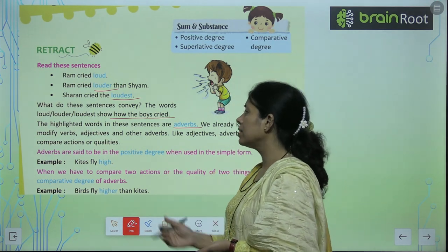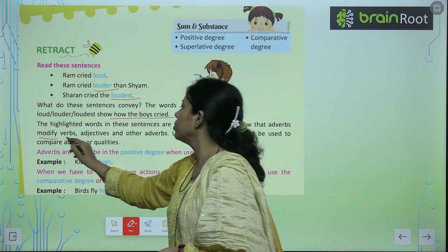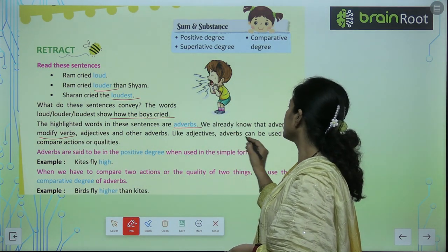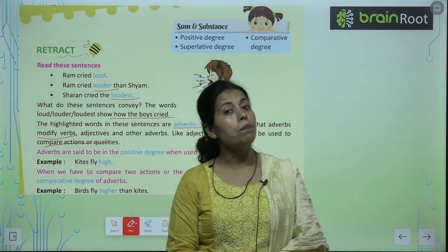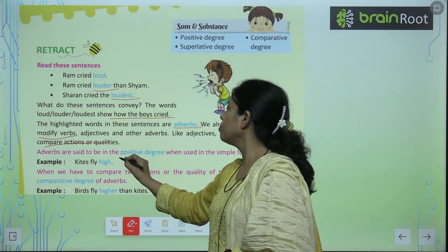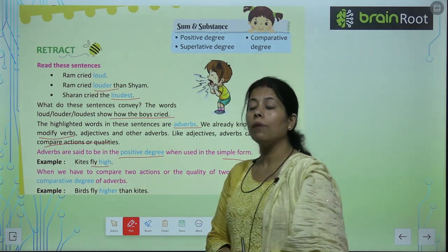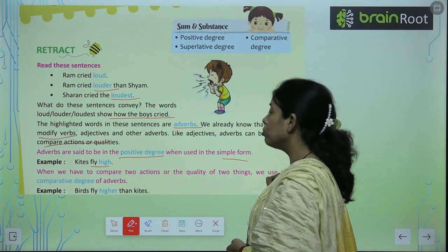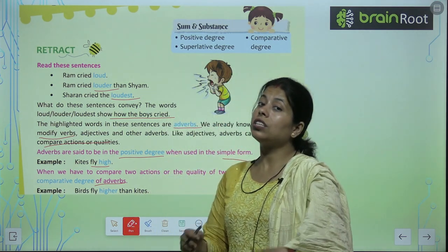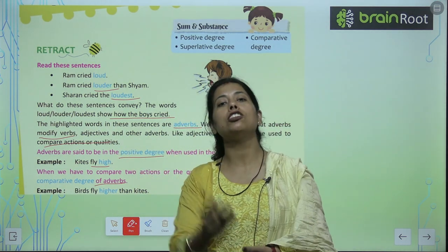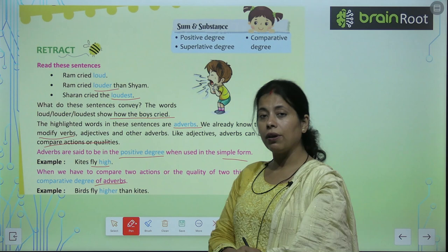अब जब हम Adverbs का comparison करते हैं, we already know that Adverbs modify verbs, adjectives, and other adverbs. Like adjectives, adverbs can be used to compare action or quality. जैसे हमने Adjective का comparison पढ़ा था, ऐसे हम Adverbs का भी comparison पढ़ेंगे. Adverbs are said to be in positive degree when used in simple form. When we have to compare two actions or quality of two things, we use comparative degree. और जहाँ एक चीज़ को सबसे compare किया जाए, वहाँ superlative degree आती है. बिल्कुल same है, Adjective की तरह.